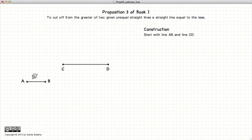So the first thing we're going to do is we're going to construct a line starting at point C that's equal in length to AB. And we'll do that using the methods described in Proposition 2.